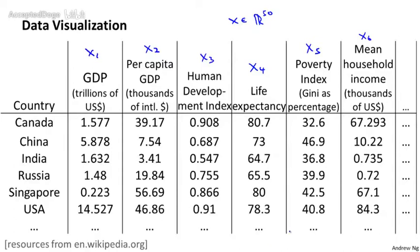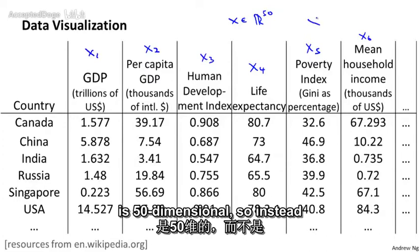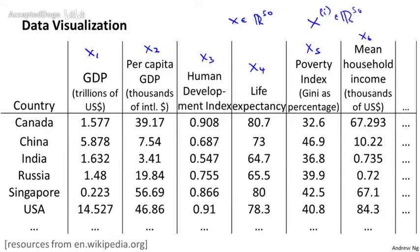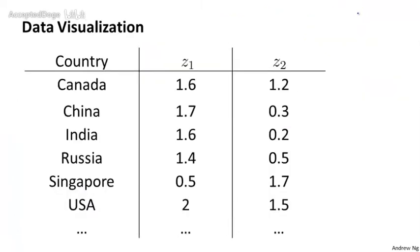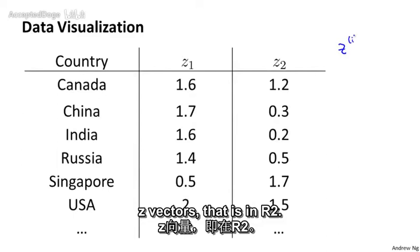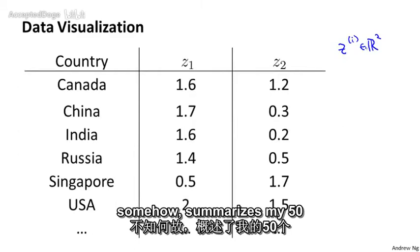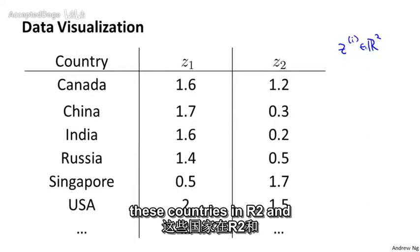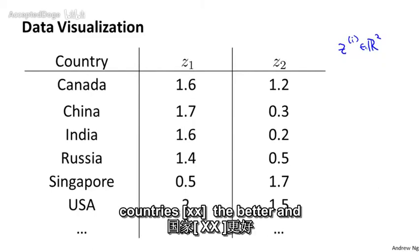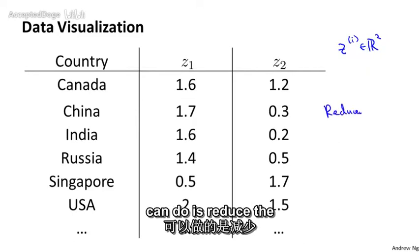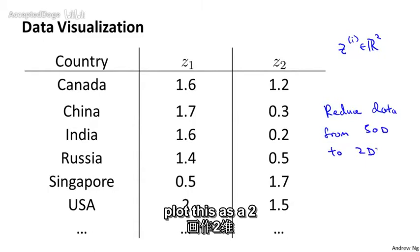Using dimensionality reduction, what we can do is, instead of having each country represented by this feature vector xi, which is 50-dimensional — so instead of having a country like Canada represented by 50 numbers — let's say we can come up with a different feature representation, that is these z vectors that are in R2. If we can have just a pair of numbers, z1 and z2, that somehow summarizes my 50 numbers, maybe what we can do is then plot these countries in R2 and use that to understand the features of different countries better. So we can reduce the data from 50 dimensions down to 2D, and plot this as a two-dimensional plot.